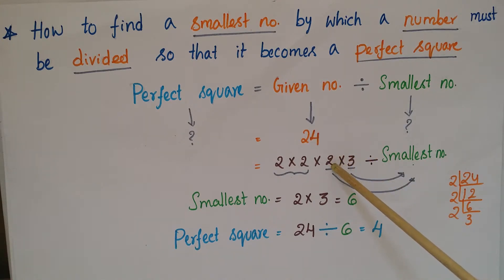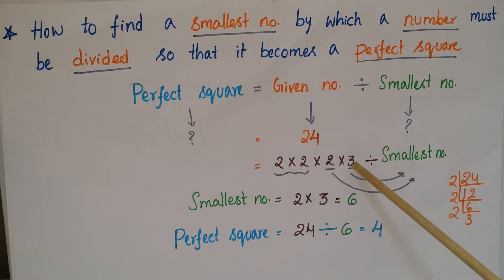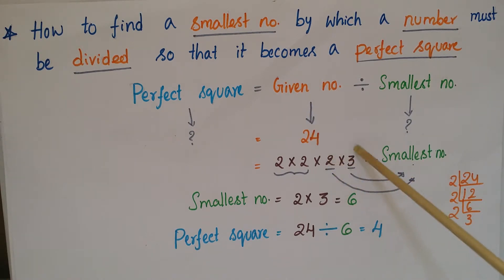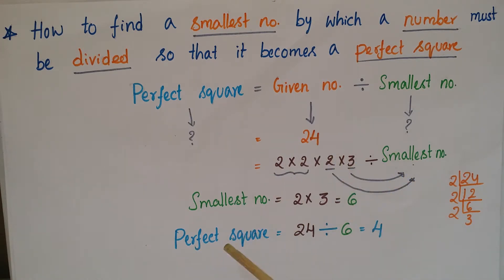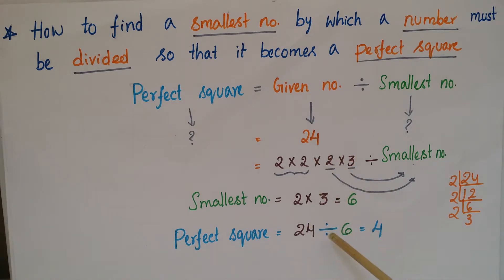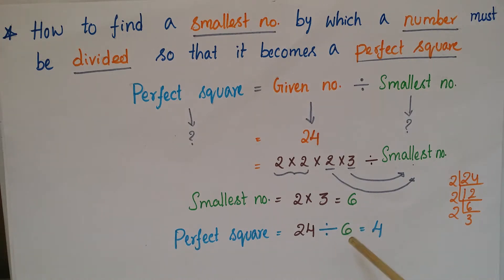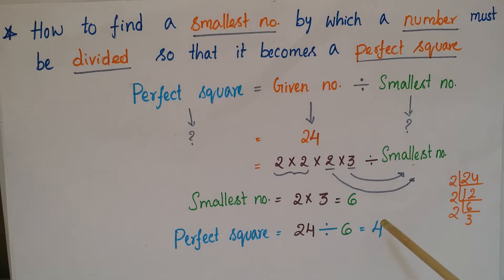So we need to multiply with 2 and with 3 — the smallest number is 2 × 3, that is 6. Therefore, the perfect square equals the given number 24 divided by the smallest number 6, which gives 4. This is a perfect square because 4 can be written as 2 squared.